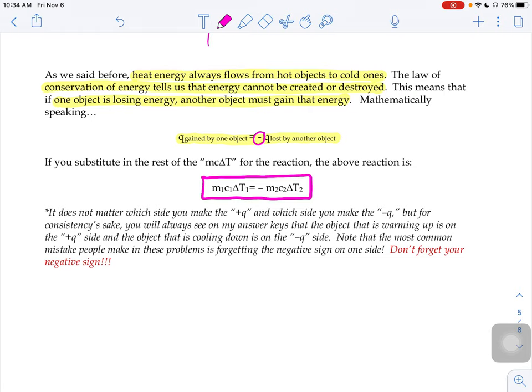If I had to pick one mistake that people make when they do these heat transfer problems, is that people forget the negative sign on one side. So if you take away one piece of advice from this type of problem, the MC∆T equals negative MC∆T, don't forget your negative.